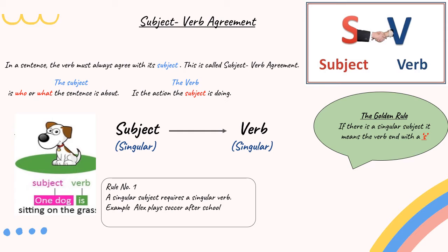In the sentence, one dog is sitting on the grass. The sentence is talking about the dog. The verb is the action the subject is doing. So, the dog is sitting on the grass.